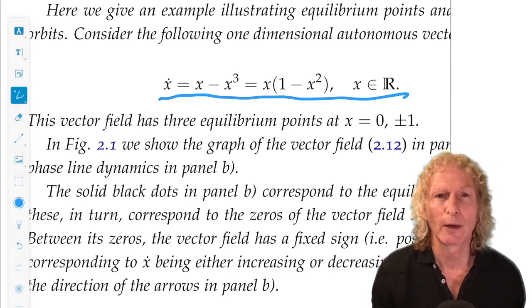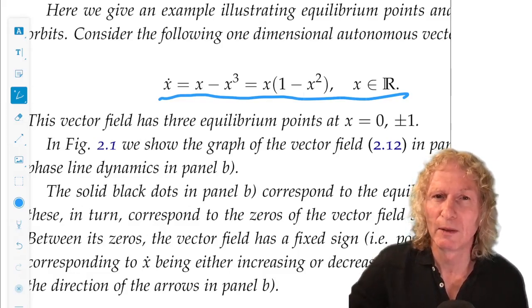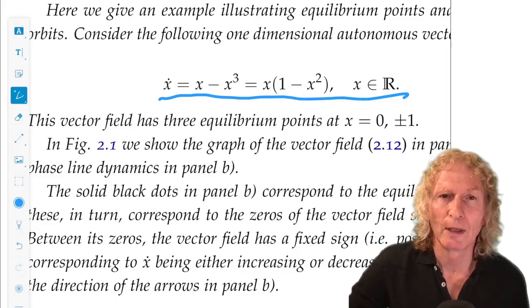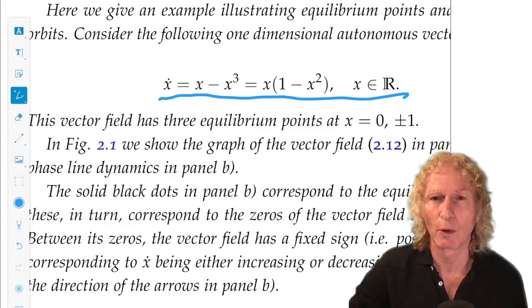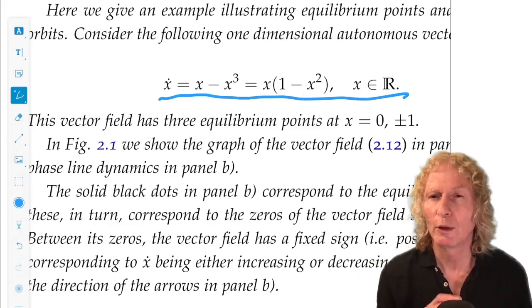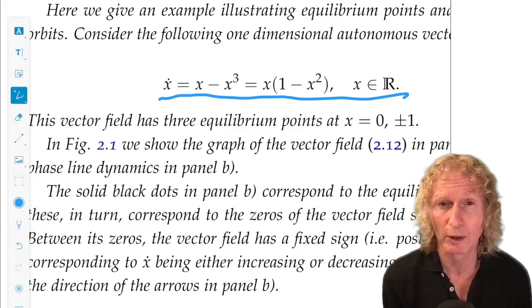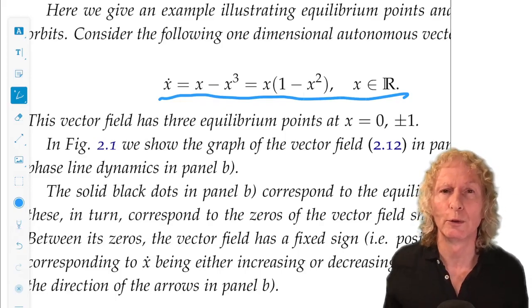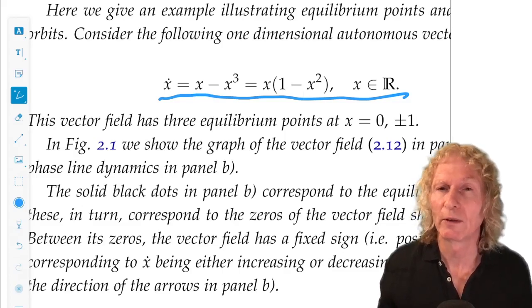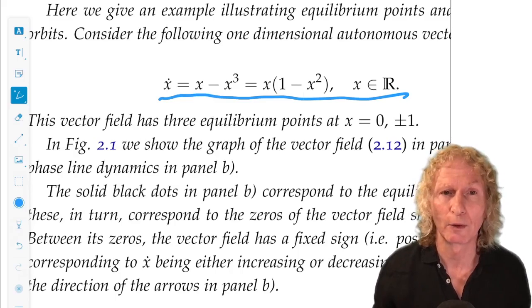But I'm going to carry out a geometric analysis in phase space. And this really illustrates the point of view, the qualitative point of view of Poincaré for analyzing differential equations. Rather than looking for an analytical form for a particular solution satisfying a particular initial condition, instead he asked, how do all solutions relate to each other? What is their geometry in the full phase space for that vector field?